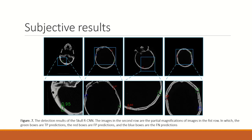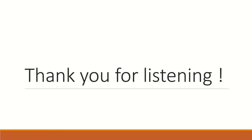Here are some subjective results. The green boxes are true positives, the red boxes are false positives, and the blue boxes are false negatives. The biggest constraint on performance is that some normal structures are also detected as fractures. Thank you for listening.